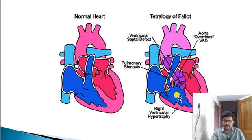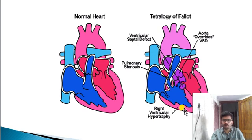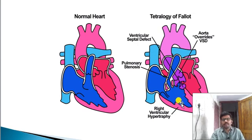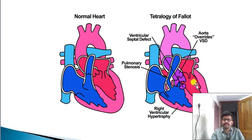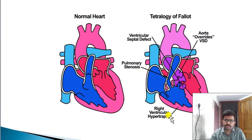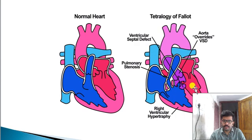This is the right ventricle resistance. Pulmonary stenosis increases the right ventricle resistance. Veins — blood is pushed from the right ventricle. In the right ventricle and left ventricle in the aorta, oxygenated blood goes into systemic circulation — this is normal heart circulation.